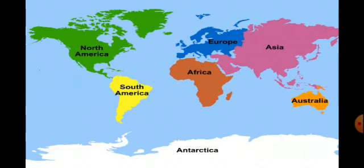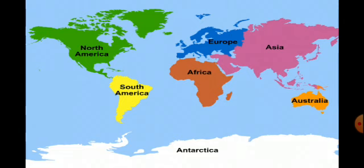What is a continent? A continent is a large area of land on which we live. Among these seven continents, Asia is the biggest continent in size. If you look at the picture, you can see Asia is the biggest compared to all other continents. You may get a doubt that Antarctica in white colour is also very big, but Antarctica is the coldest region where no people live.